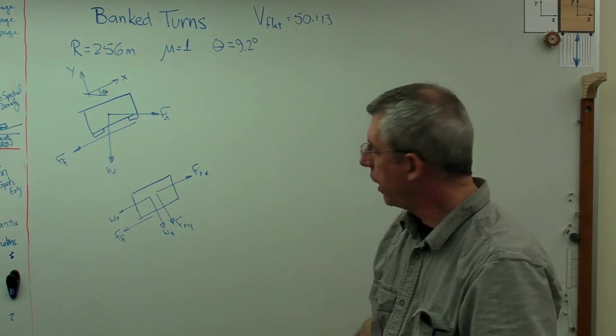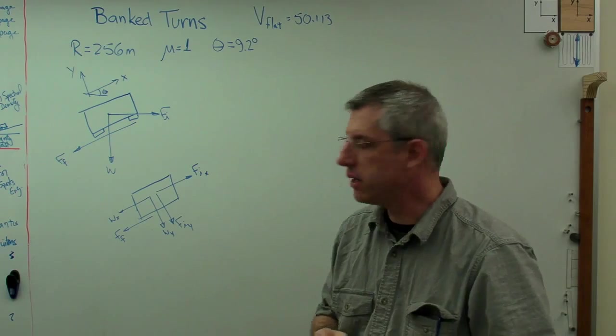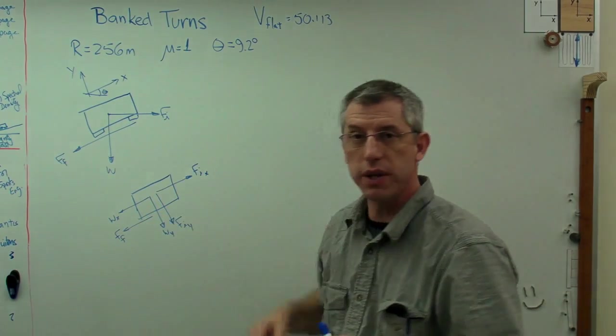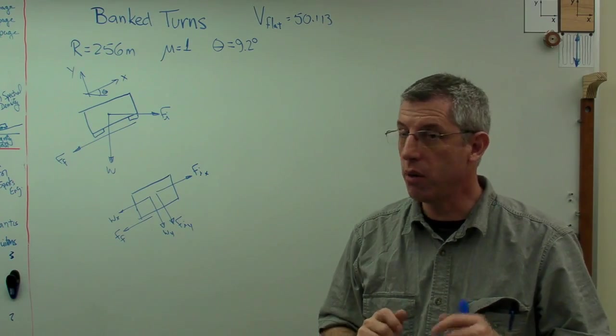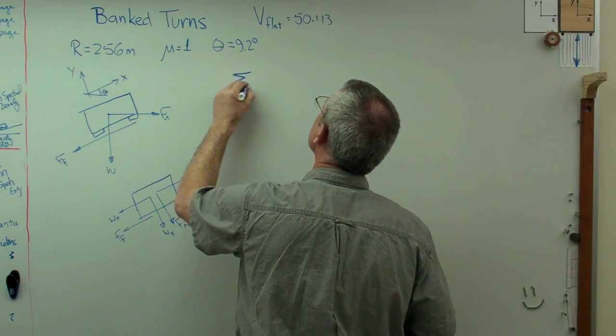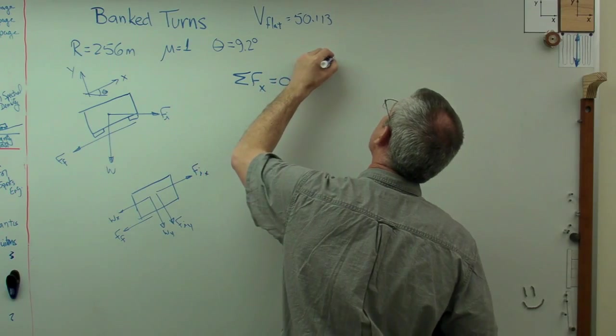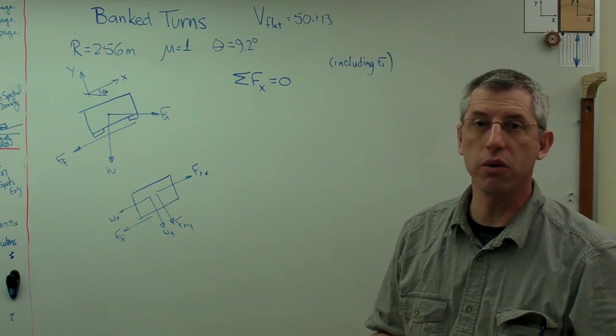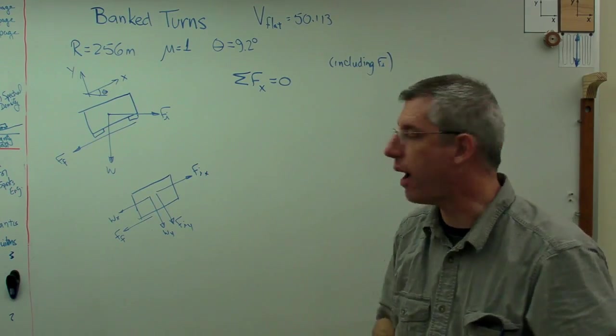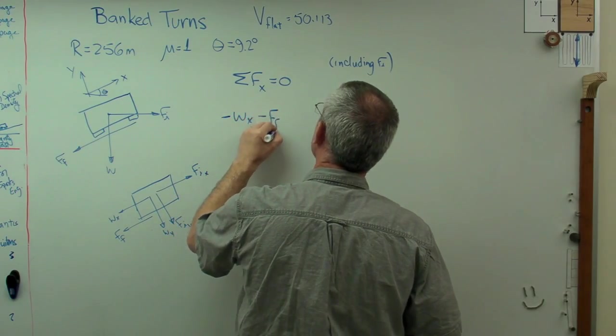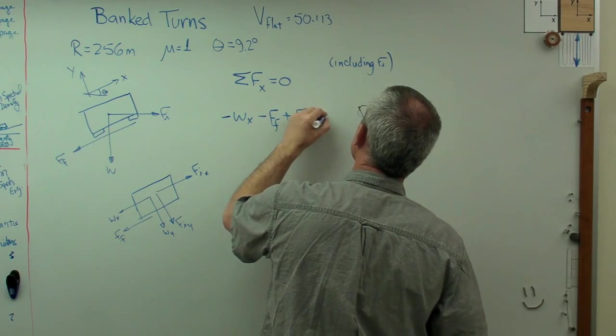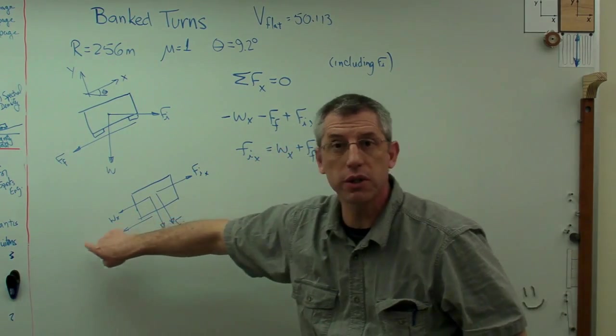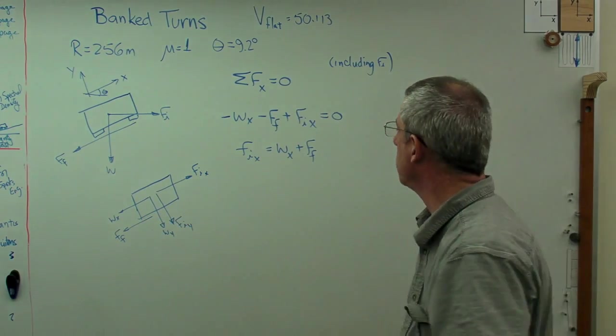I'm going to break f_i and w down into their x and y components. I'm going to call that f_i sub x and f_i sub y. I'm going to have w sub y and w sub x pointing the other direction. Friction force is still there. What I want is when the acceleration is an absolute maximum, this thing is just on the edge of sliding. That means the friction force plus that exactly equals that. I'm interested in the forces in the x direction, so I'm going to say sum of the forces x equals zero. I'm going to call this dynamic equilibrium.